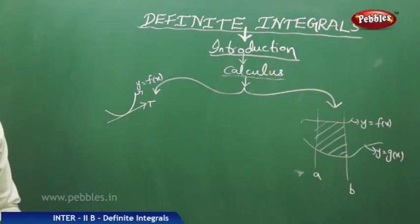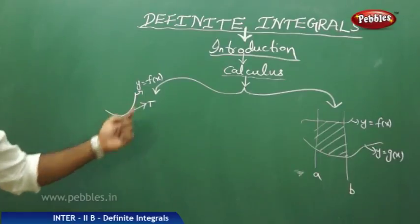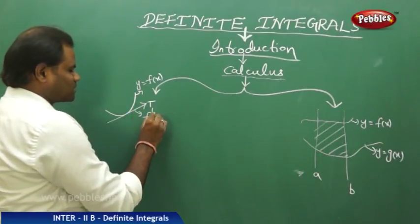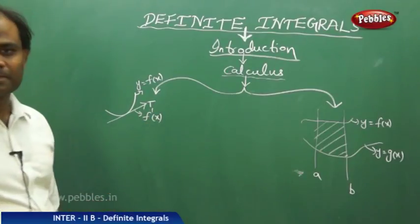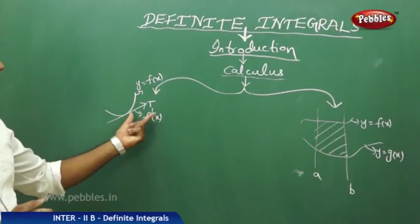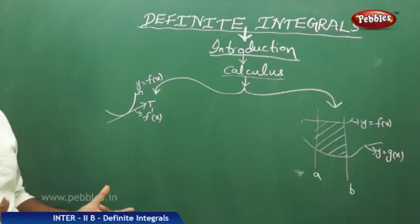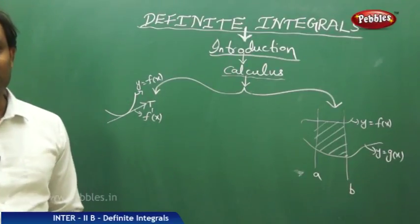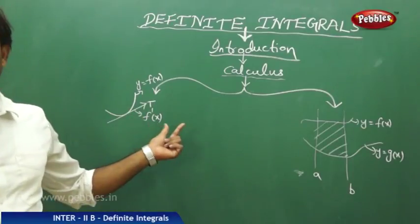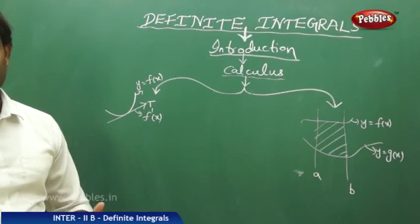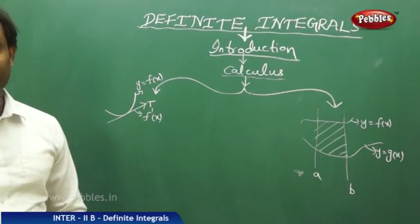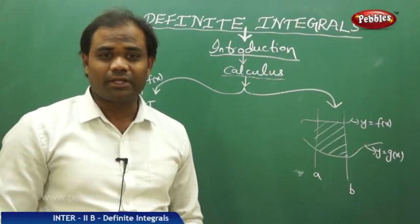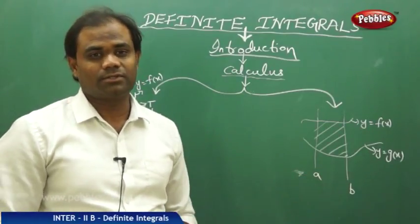Differentiation helps in finding the equation of the tangent because the slope of the tangent is assumed as f dash x. This is how differentiation helps in finding the equation of tangent, and hence mathematicians could resolve this by finding the derivative of f of x. Differentiation has its significance in finding the equation of tangent to any curve y equals f of x.